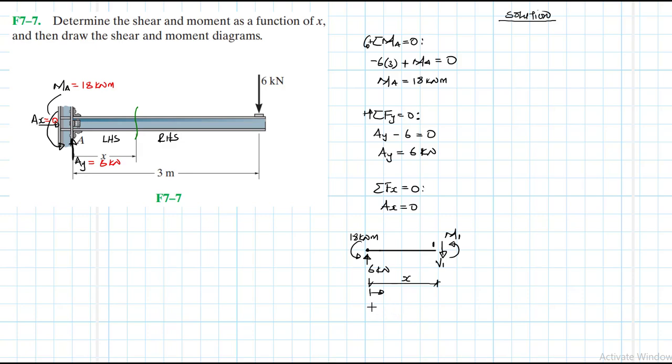Now let's apply the equations of equilibrium quickly. Summation of moments about point one equal to zero, anticlockwise as our reference. What do we have? Of course we do have minus six times x. This is clockwise. And then we have plus 18 plus M1 equal to zero.